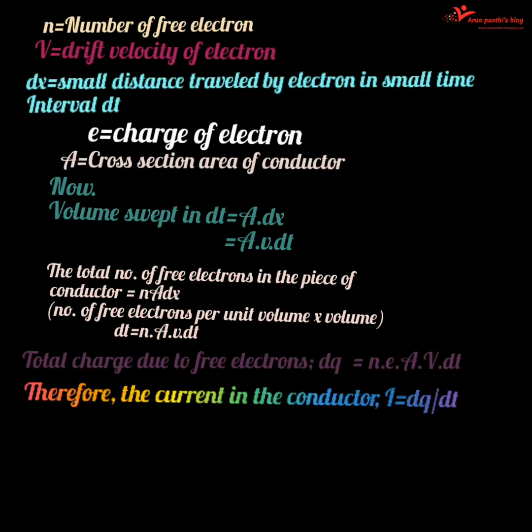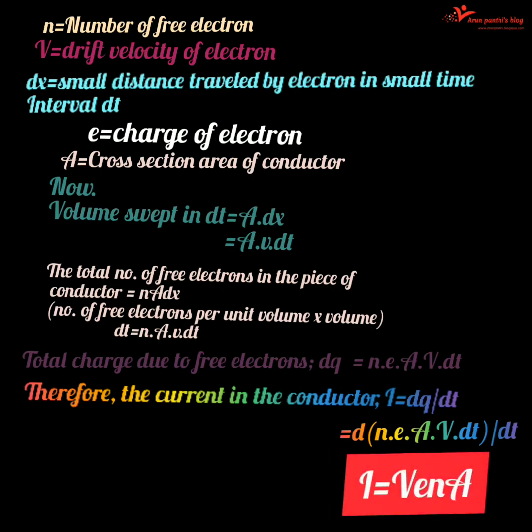The charge transferred across the dx section in dt time is given by dq = e·n·A·V·dt. Since electric current i = dq/dt, substituting dq we get i = e·n·A·V, that is i = neAV.